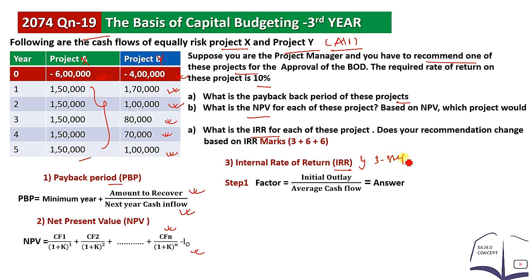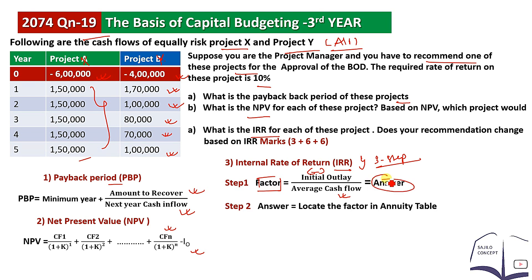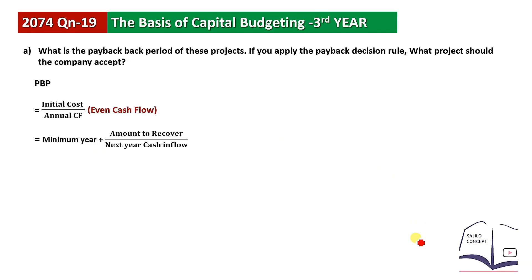For the internal rate of return, we follow three steps. First, calculate the average cash inflow. Second, check the PVIFA table. Third, identify the higher rate and lower rate percentages, then use interpolation: IRR equals lower rate plus NPV at lower rate divided by (NPV at lower rate minus NPV at higher rate), multiplied by (higher rate percentage minus lower rate percentage).